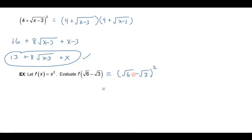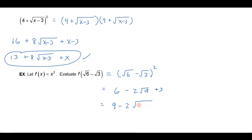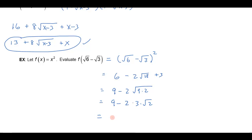Applying the rule: I square √6 to get 6, I multiply √6 times negative √3 to get −√18, and I double that. Then I square negative √3 to get +3. I can simplify √18 as √(9·2), so √18 = 3√2. Combining 6 and 3 gives 9, and −2 times 3√2 gives −6√2. The final answer is 9 − 6√2.